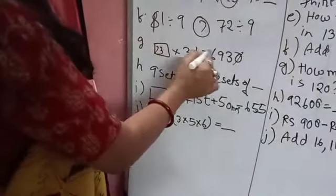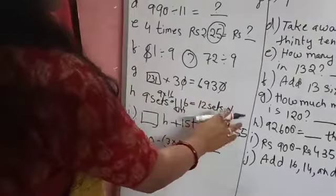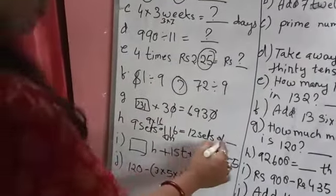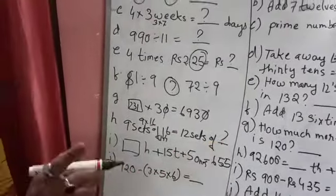9 sets of 16. 9 sets of 16 means 9 into 16. What is 9 into 16? That is 144. I am telling you 144. 12 eights are 144. 12 sets of what means what makes 144? You know the table, you do it yourself. I help with the sum to you. This remaining you have to do yourself.